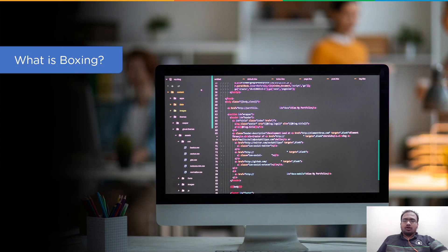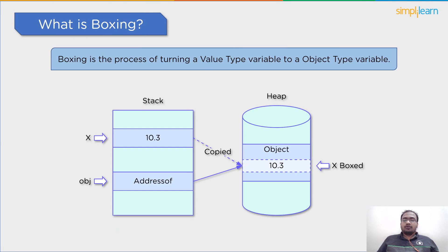Let's get started with the discussion on what is boxing. First of all, boxing is a process of turning a value type to an object type or any interface type that this value type implements.